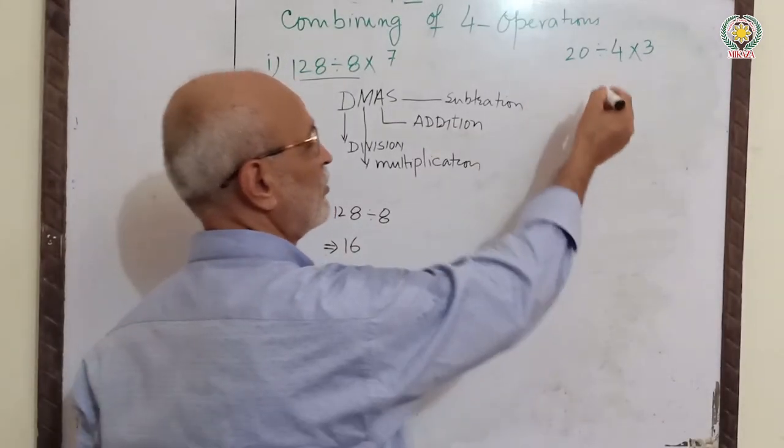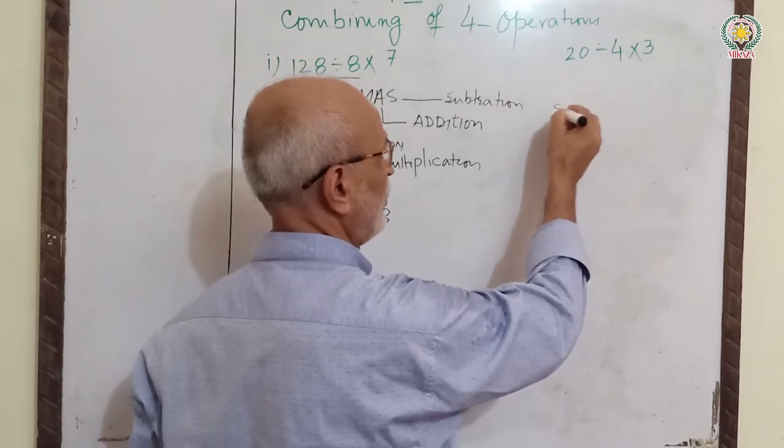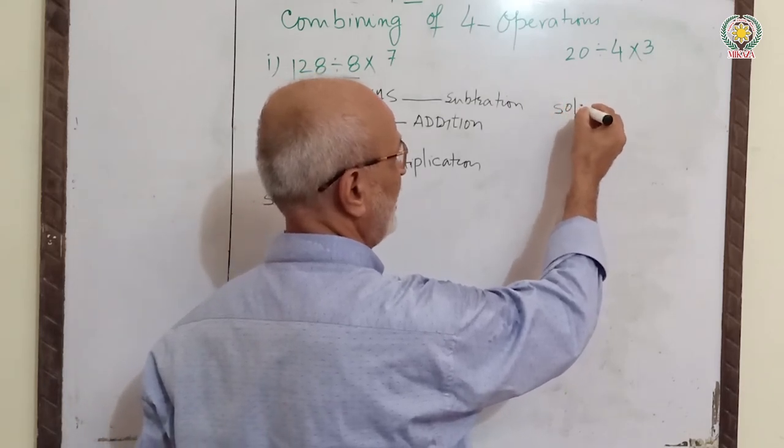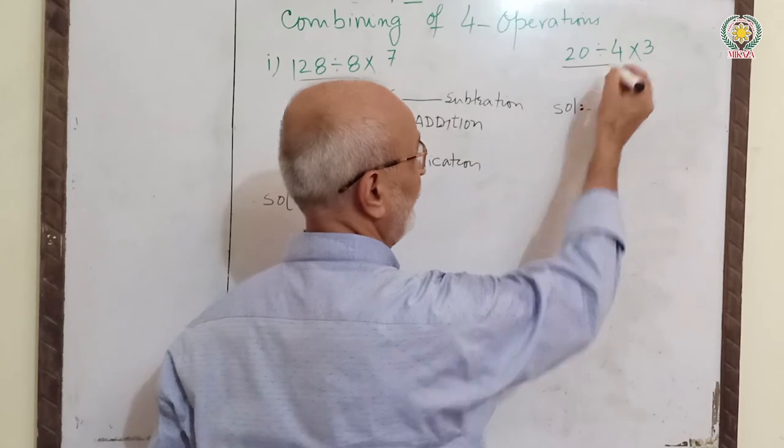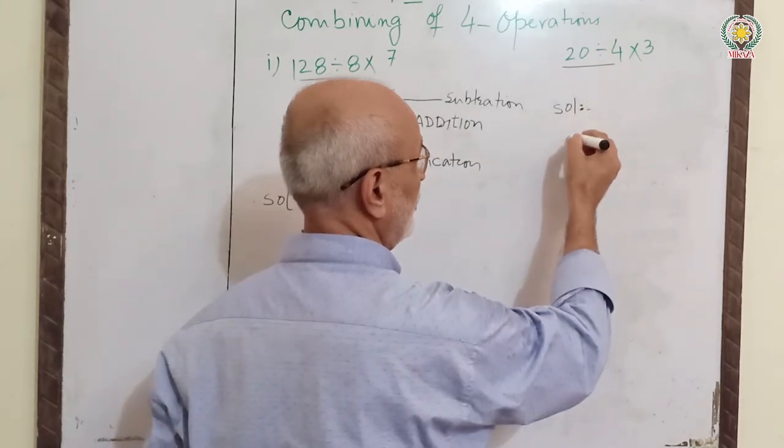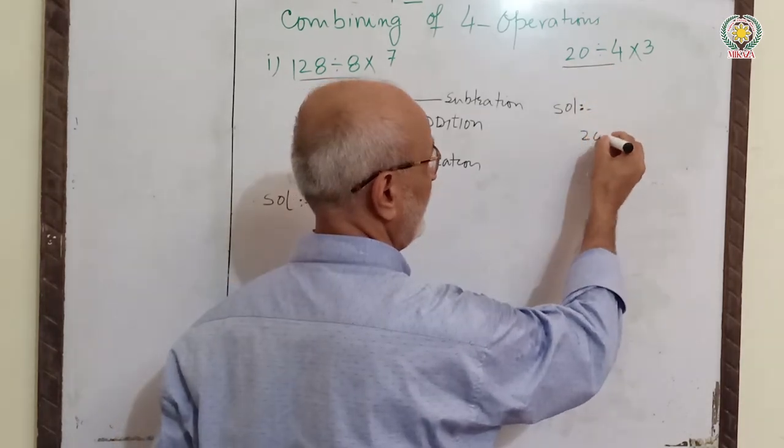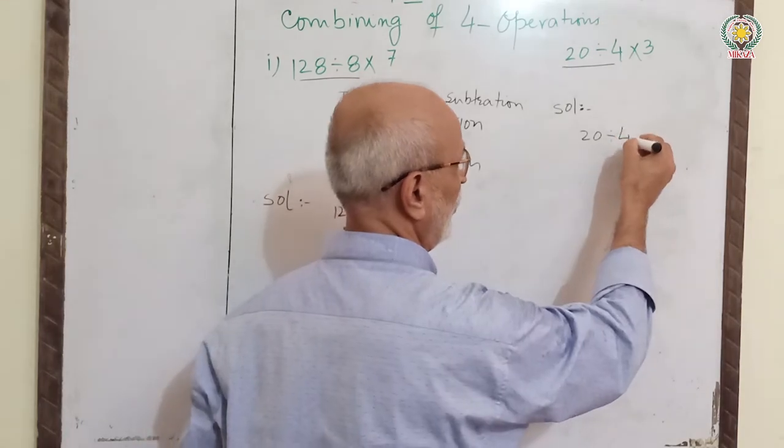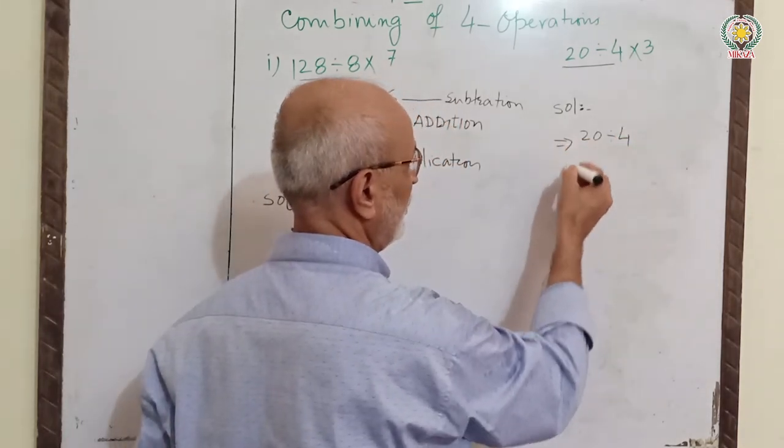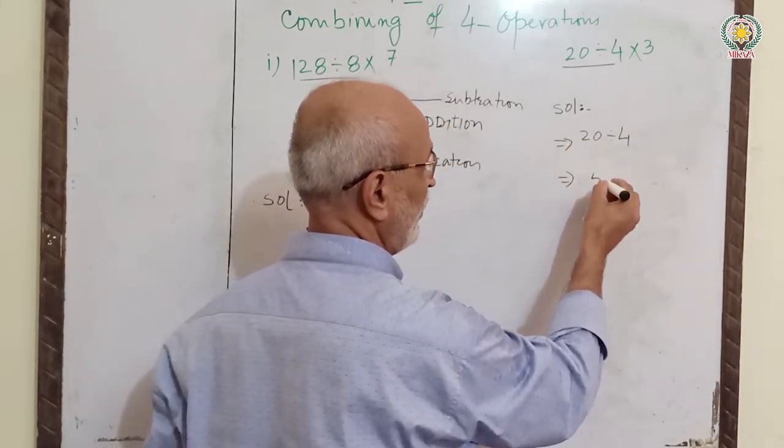Now, another question. First, we do division as explained. 20 divided by 4.